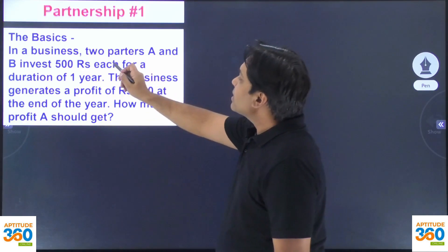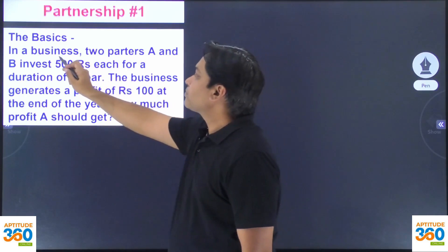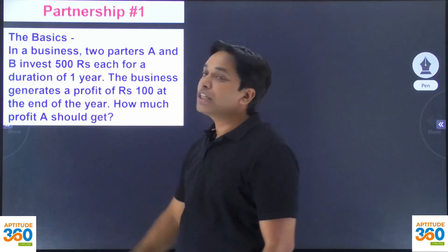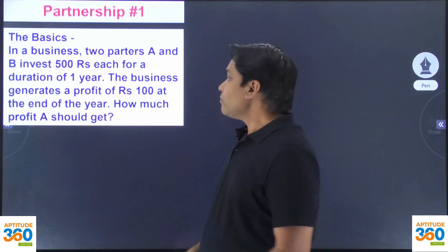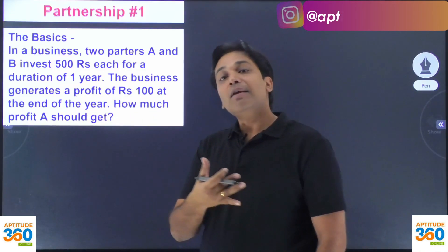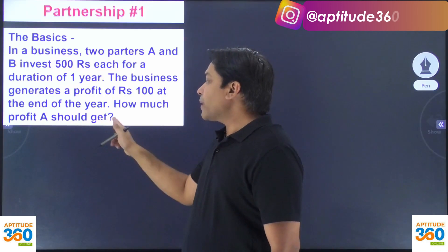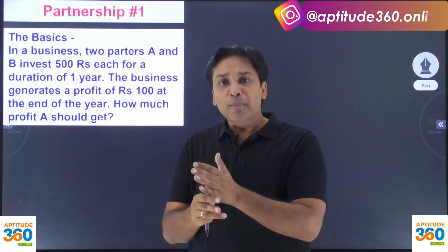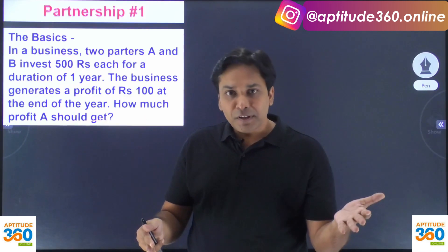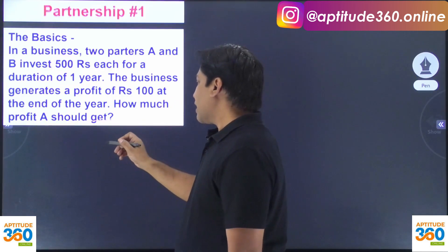In a business, two partners A and B are investing 500 rupees each — A is investing 500 rupees and B is investing 500 rupees — for a duration of one year. The business generates a profit of 100 rupees at the end of the year. How much should A get and how much should B get? Your common sense should tell you the profit should be distributed equally: A gets 50 rupees and B gets 50 rupees.